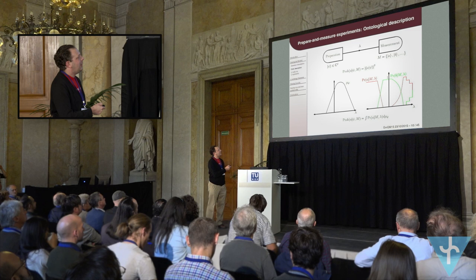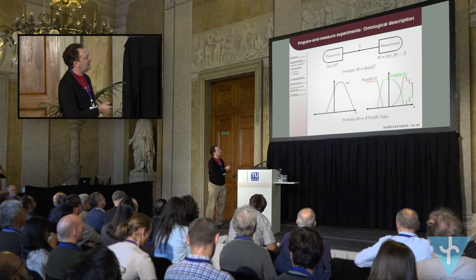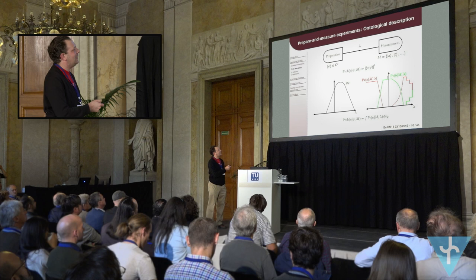In this kind of model, you compute the probabilities you observe in the lab by averaging the measurement probabilities over your uncertainty about the true ontic state. You want this model to reproduce the quantum predictions — so this averaged quantity should equal the quantum mechanical prediction. That's basically the whole formalism.